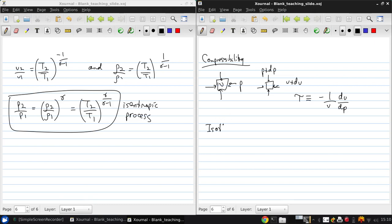So we have an isothermal tau_T, constant temperature, which is negative 1 over v dv/dp at constant temperature. And we also have an isentropic tau_S, entropy is constant, negative 1 over v dv/dp at constant S.